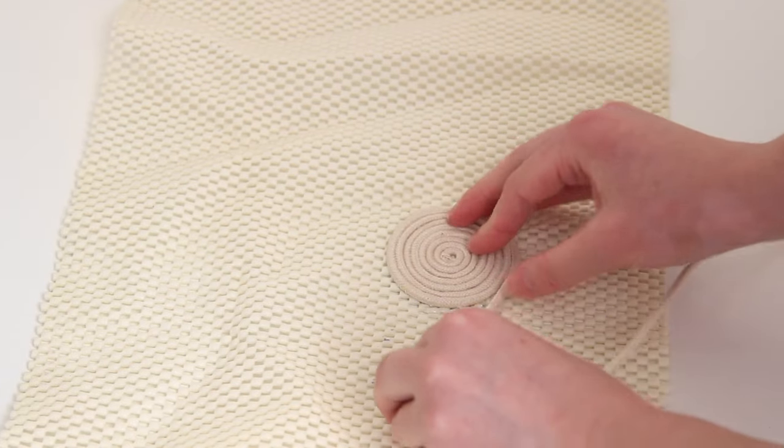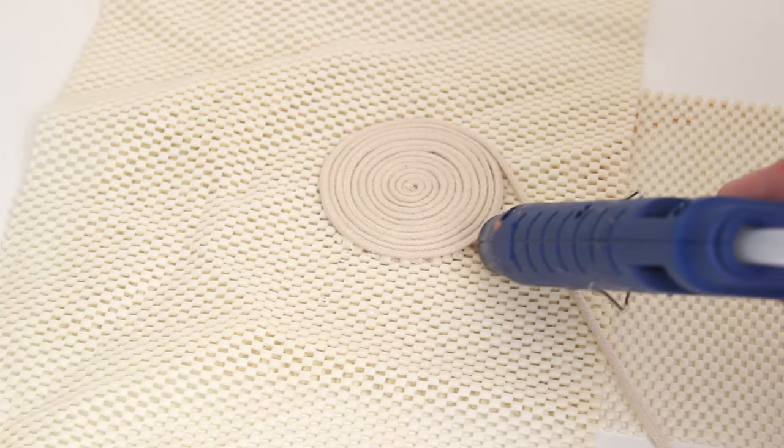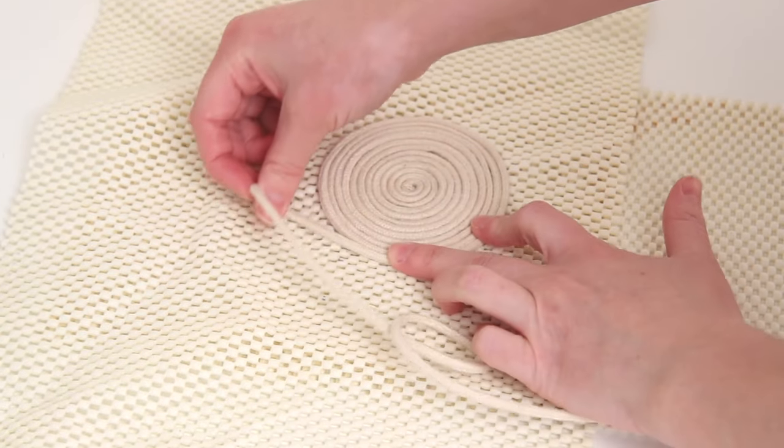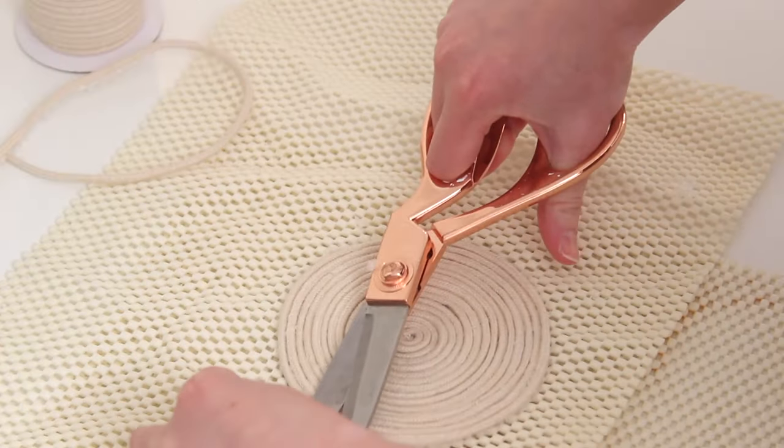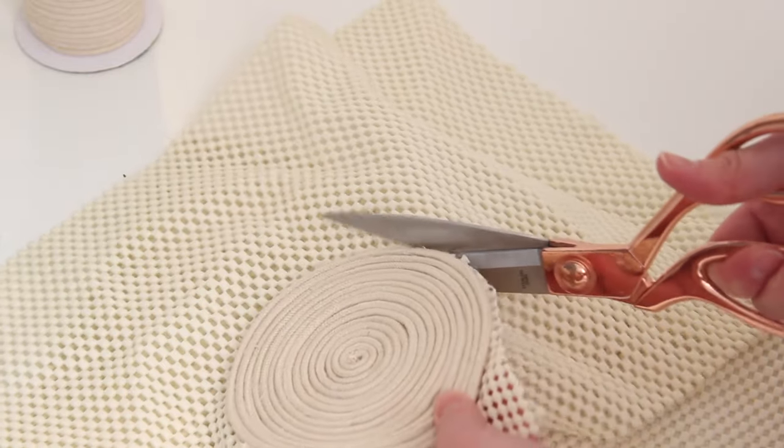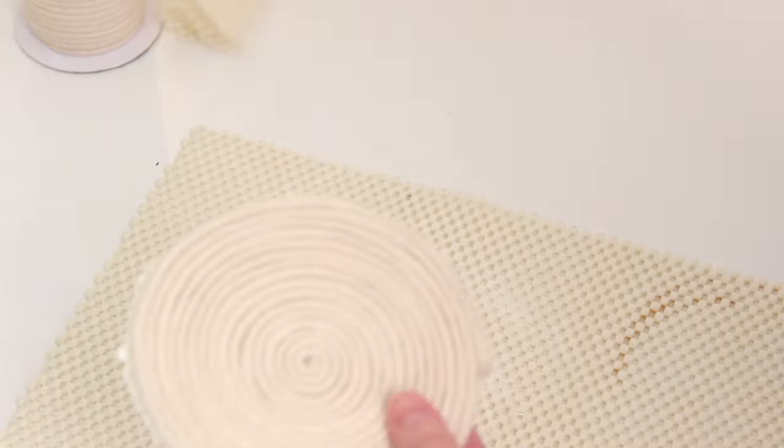And then continue gluing so that your rope or whatever you use is going to be glued right down to your base. Now at this point, I realized I was probably gluing it to my table, so I added another layer and that worked out well. Then I made it about the size of a coaster.